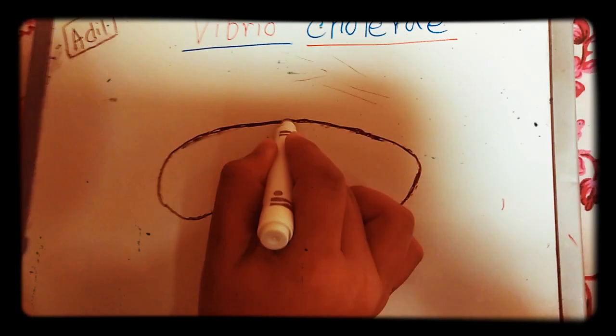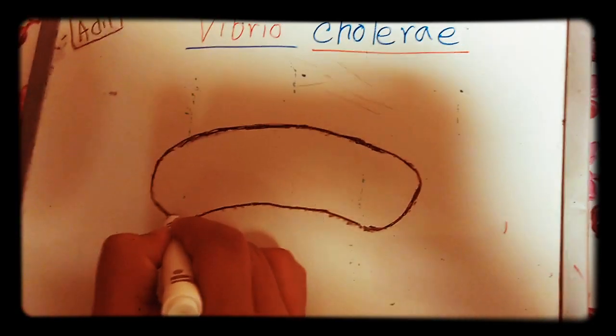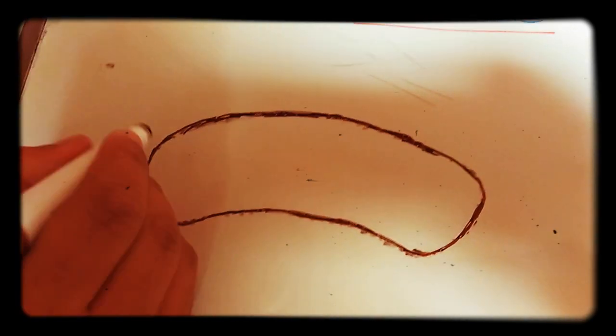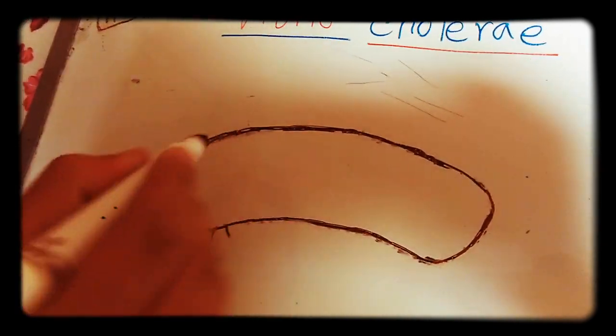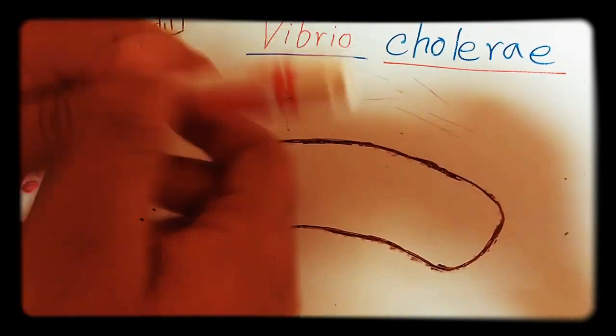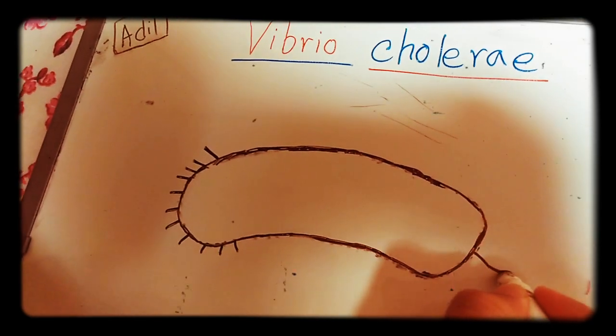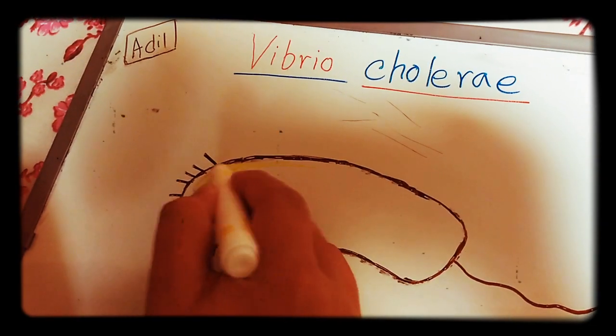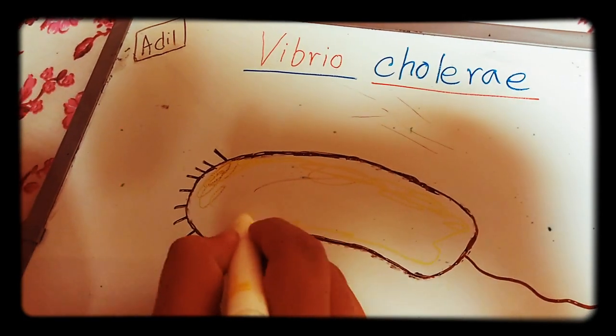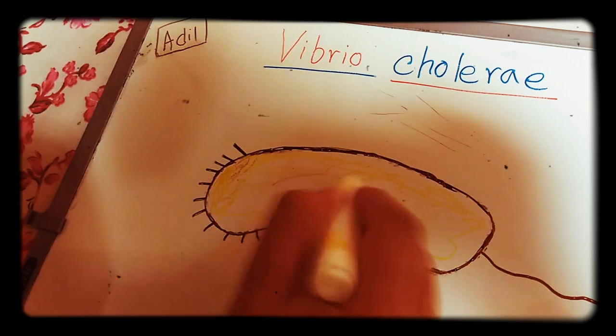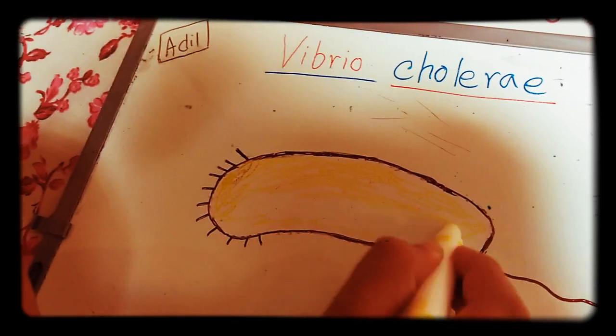I'm just going to show you how to do it — you can draw it more nicely. This is the body of the bacteria. You can make it yellow because the color is a little bit yellowish, and the shape is comma-shaped. The gram stain is negative.